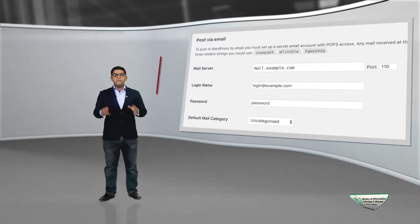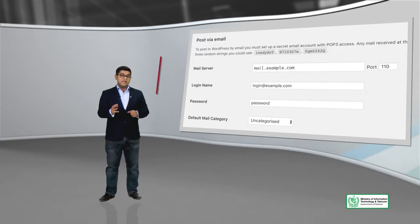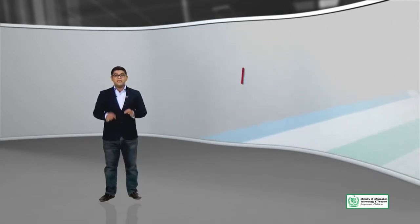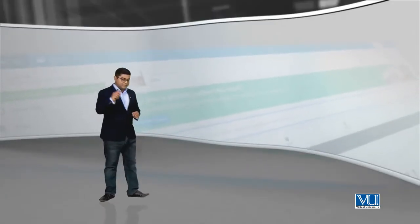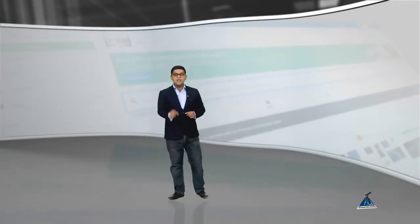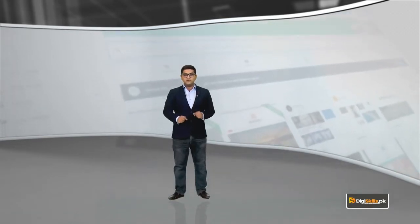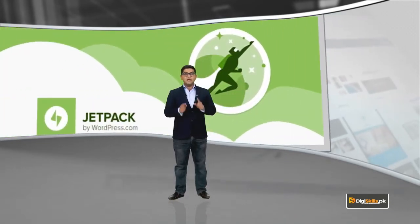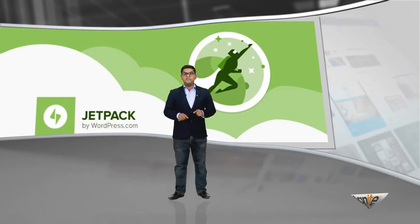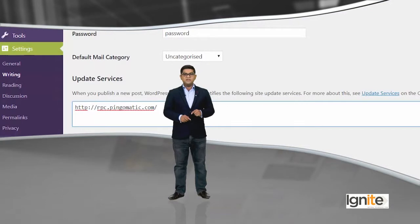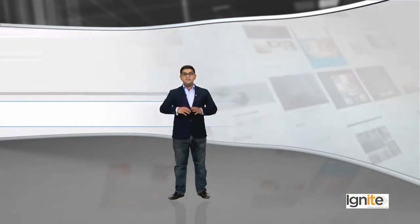The next option is called post via email. You can write a WordPress blog post just by sending an email — you can use the plugin called Jetpack to post via email very easily. The third option is update services — update services inform other websites on the internet that you have updated your blog post, which is very good for SEO.